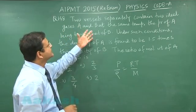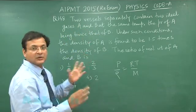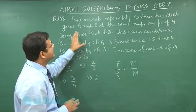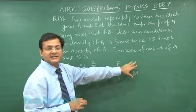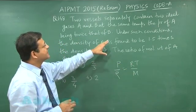You have been given two vessels separately containing two ideal gases. You have to compare the things. They have given you same temperature - R is same, T is same. They have given you the ratio of density.